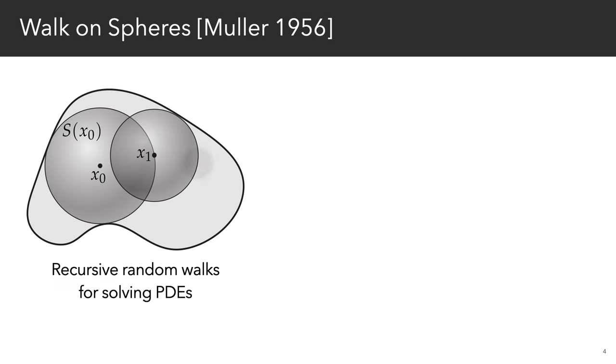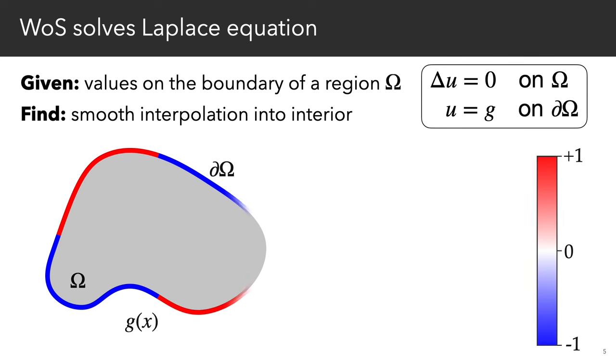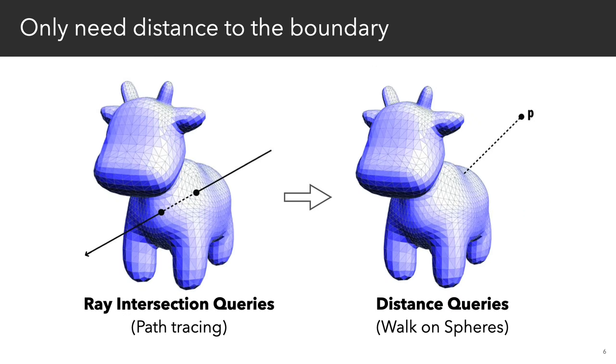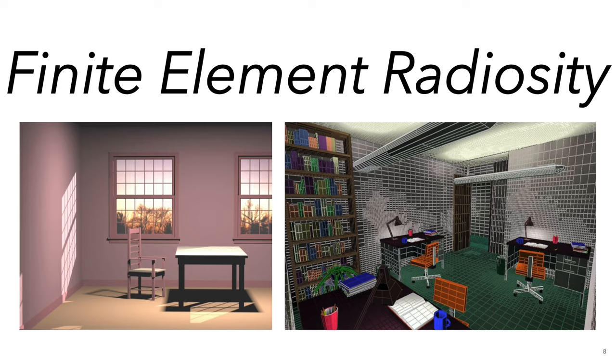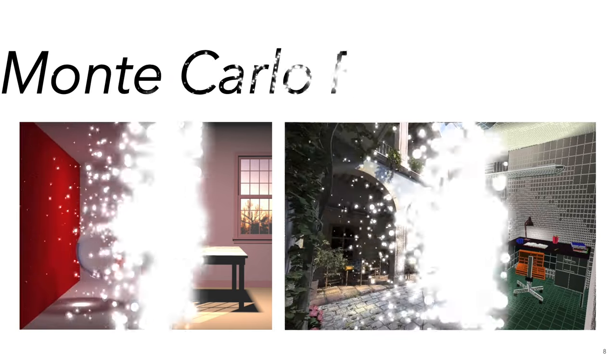We achieve this by introducing the walk-on-spheres algorithm to the graphics community, which, like Monte Carlo path tracing, performs recursive random walks to smoothly interpolate boundary data, such as temperatures, displacements, or colors, into the interior of a domain. In place of ray intersection queries, the only geometric kernel we require is computing the distance to the boundary. So back in the 90s, photorealistic rendering switched from finite element radiosity to Monte Carlo ray tracing, because meshing complex scenes is really hard.